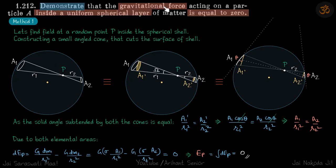We need to demonstrate that gravitational force inside a shell is equal to zero. We'll do it with two methods. The first method is quite beautiful and the hint is given in the back of the book.